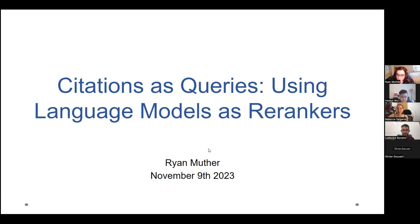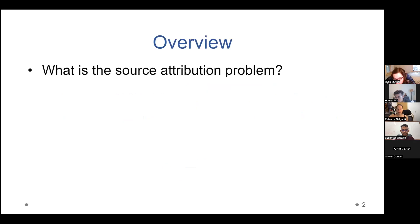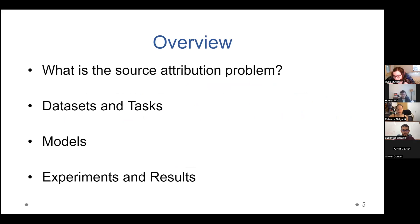So hi, everyone. I'm Ryan Muther, and I'm currently down at Northeastern. And I'm going to present some of the work I've been doing on using language models as re-rankers to solve the problem of source attribution. Generally how this is going to work is I'm going to talk about what this problem of source attribution is and talk about the datasets and the tasks that we're using to explore it, and then the forms of models that we are working with. And then I'm going to give some information on the experiments I've done and on the results.